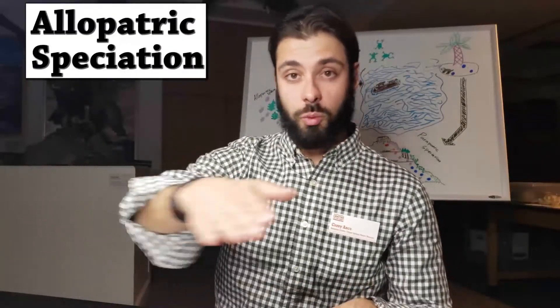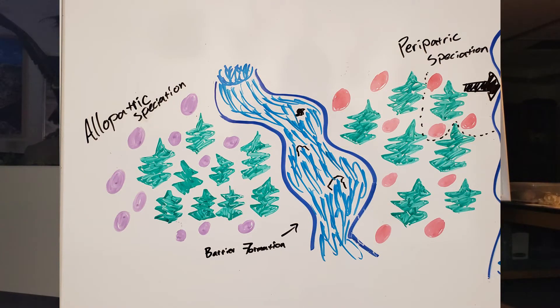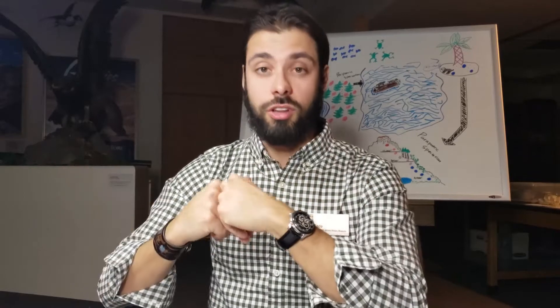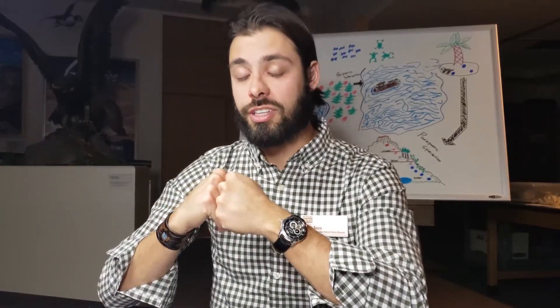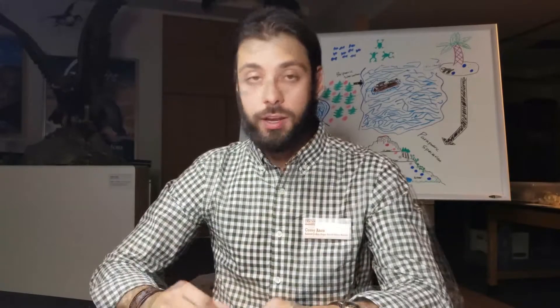Allopatric speciation is when a physical barrier — such as a wide river, a really large mountain, or something like a desert ecosystem — separates members of the same species into two large populations. If that physical barrier exists for a long enough time, we're talking on the orders of tens of hundreds of thousands of years, those two populations no longer exchange genetic material, and selective pressures at play may then result in the fixation of mutations within each population.